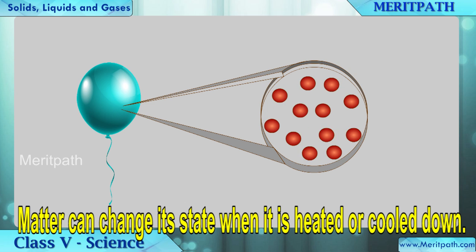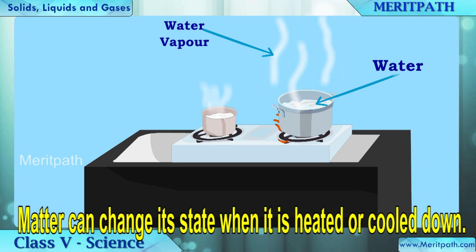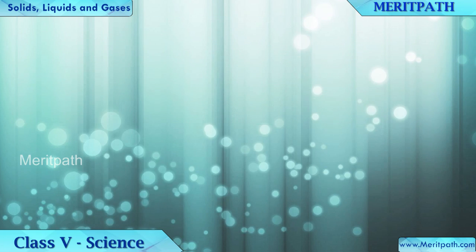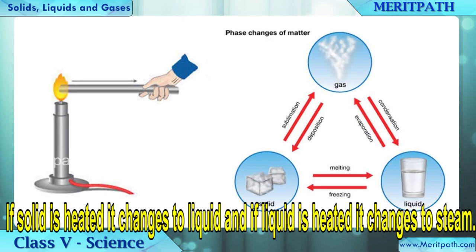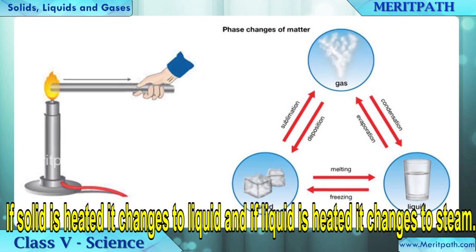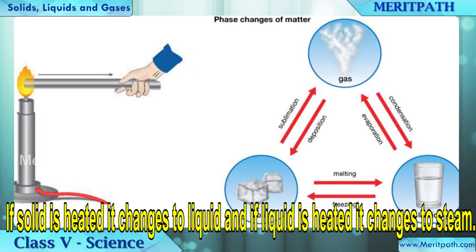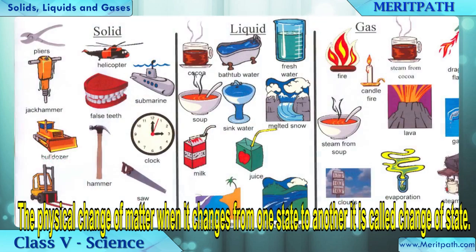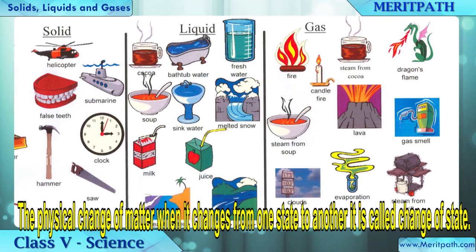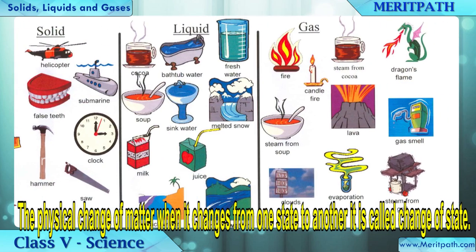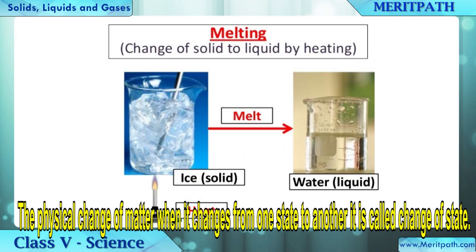Matter can change from one state to another if heated or cooled. If a solid is heated, it changes to a liquid, and if a liquid is heated, it changes to steam. The physical process where matter moves from one state to another is called a change of state.